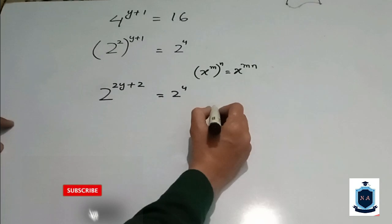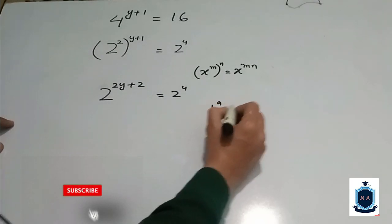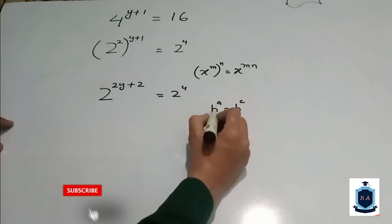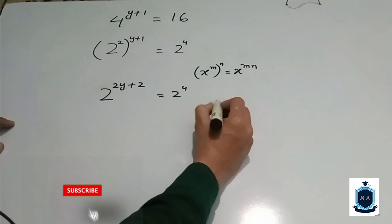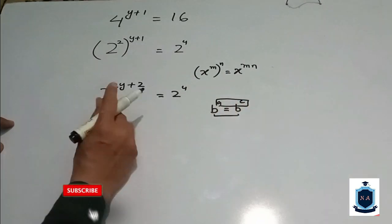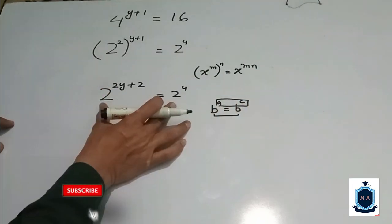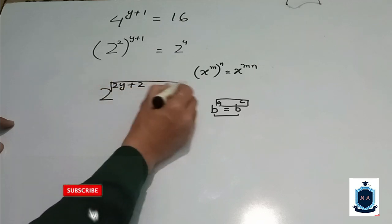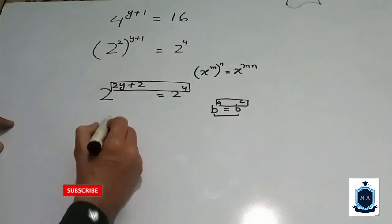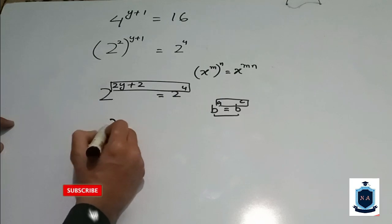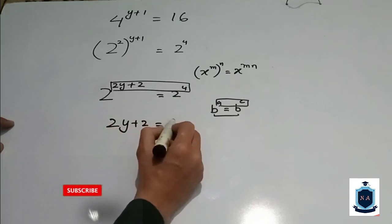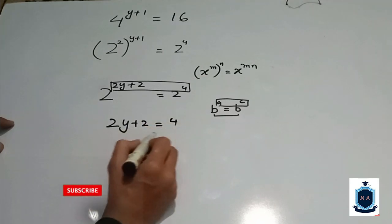Here you can see that if b power a is equal to b power c, and the bases are the same, we compare the powers. In this question you will see that the bases are the same, so we will compare the powers of both sides.